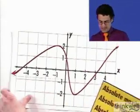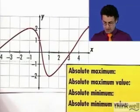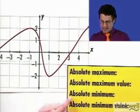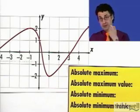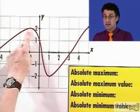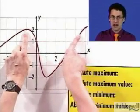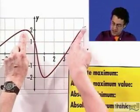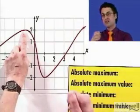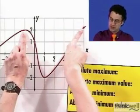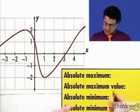So certainly these are examples of local max and local min, but are any of them actually global or absolute? What is the absolute maximum of this function? I'm looking for the absolute peak. Notice that the function, as we move to the right, gets higher and higher without bound — that trend continues. So in fact, there is no absolute maximum.